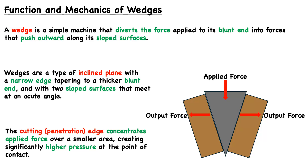Wedges are a type of simple machine that divert the force applied to their blunt end into forces that push outward along their sloped surfaces. Wedges are actually a type of inclined plane, with a narrow edge that tapers to a thicker blunt end, and with two sloped surfaces that meet at an acute angle.